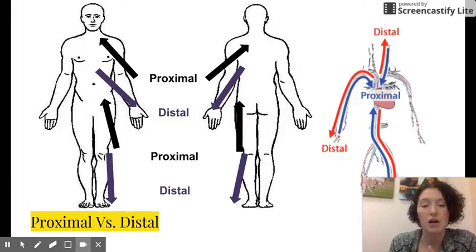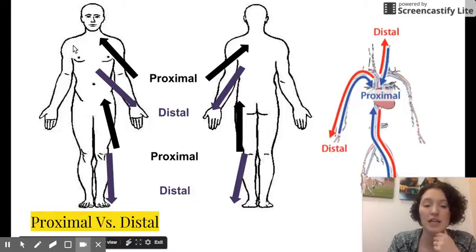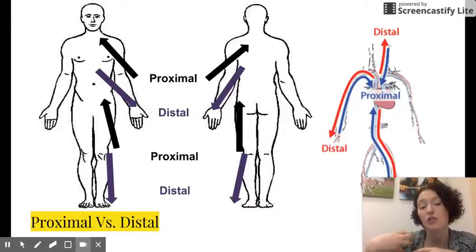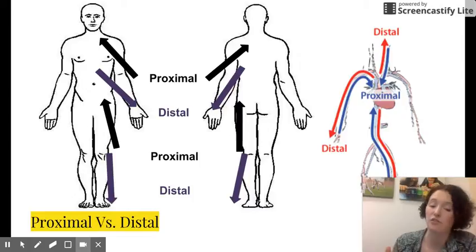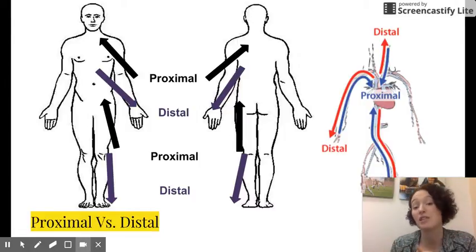Proximal and distal: proximal means it is closer to a point of attachment to the trunk, where the trunk is your main body area from the shoulders and torso down to the groin. Distal means it is further away from that point of attachment. Again, these are all relative terms.